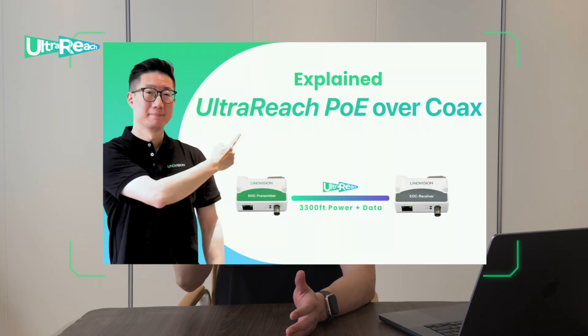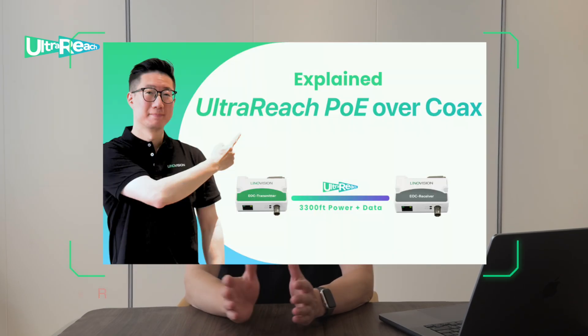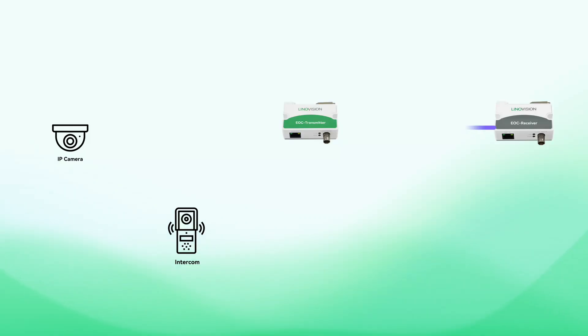In terms of front-end deployment, it follows the same approach as we previously explained in the Ultra-HPOE Solution — if you want to know, check that video. Using the EOC receiver to connect to a POE switch or injector, the key difference lies at the transmitter end, where the IP devices are connected.